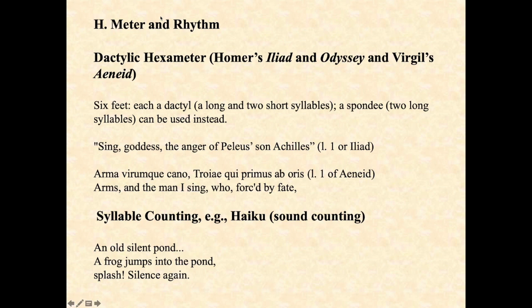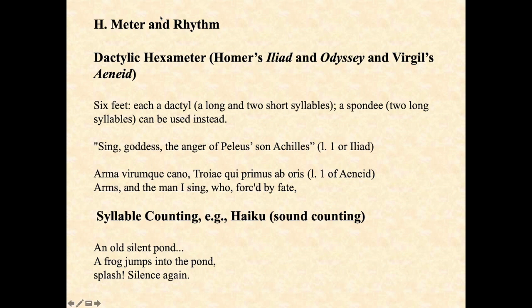One of the more controversial aspects of Hebrew is whether or not it has meter and rhythm. Classical poetry and poetry from other parts of the world can often have a very strict rhythm and meter, which is patterns of stress, or even very strict syllable counting. For example, what is called dactylic hexameter — as in Homer's Iliad and Odyssey and Virgil's Aeneid — has six feet. A dactyl is a long and two short syllables, or a spondee, which is two long syllables.